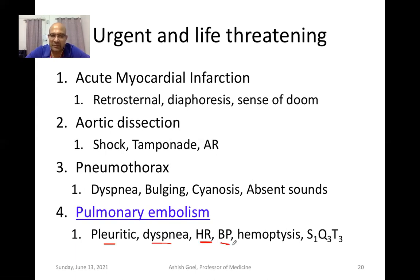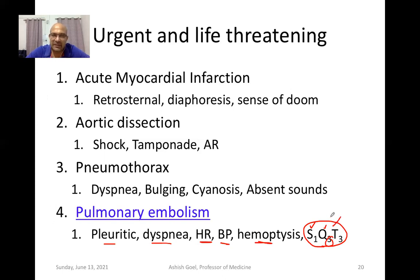In pulmonary embolism, the patient may have tachycardia, blood pressure may be very high or very low depending on severity, and there may be hemoptysis. On ECG, you would find an S1Q3T3 pattern — meaning in lead one there is an S wave, in lead three there is a Q wave, and in lead three there is an inverted T wave. This S1Q3T3 pattern is characteristic of pulmonary embolism.